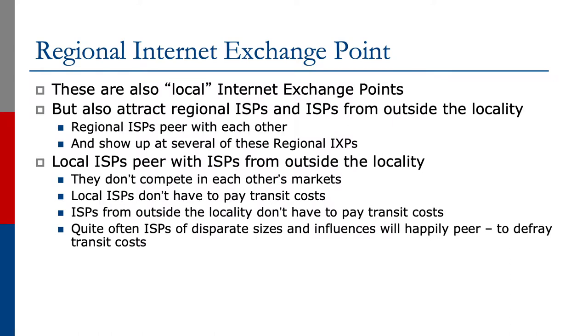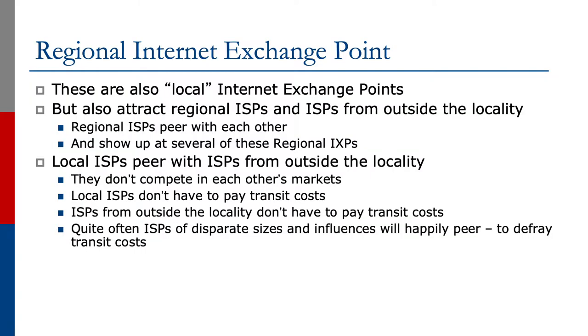A regional internet exchange point is also a local internet exchange point, but is now large enough that it attracts regional ISPs and ISPs from outside the local area who want to peer with each other. Once the regional ISPs start peering, they could offer transit to some of the local providers. Local ISPs can peer with ISPs from outside the locality because they don't compete in each other's markets and don't have to pay transit costs. ISPs of disparate sizes will happily peer with each other simply to defray transit costs.